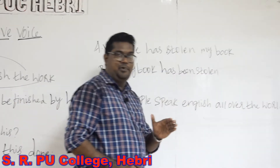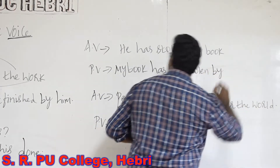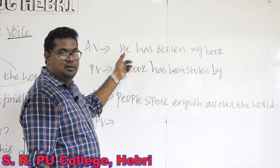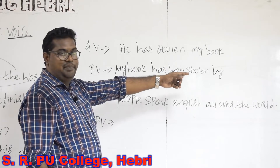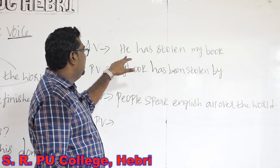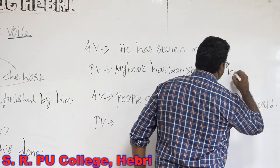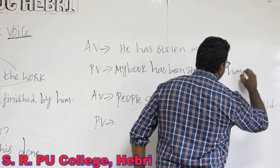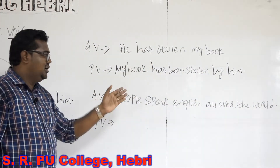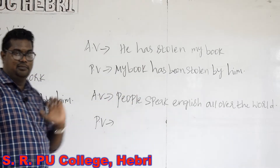Then the preposition 'by', and finally the subject will become object in passive voice. So you need to write the correct form of the pronoun 'he', that is 'him'. So 'He has stolen my book' will be changed as 'My book has been stolen by him'.